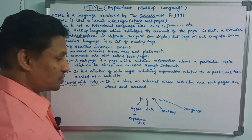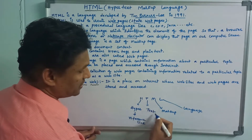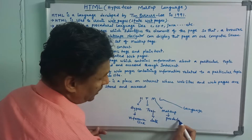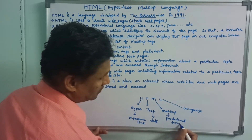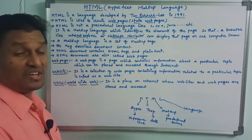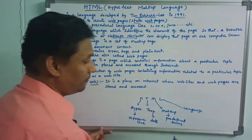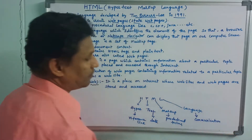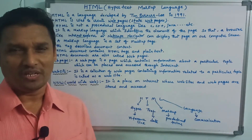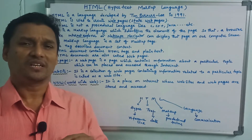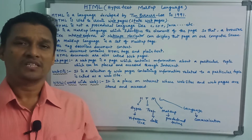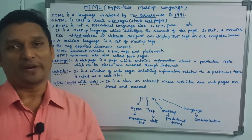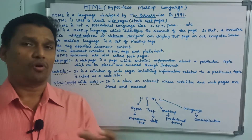So reference link means text is data. Markup means predefined terms — terms means keywords. So predefined keywords are called tags. Language means communication purpose. So HTML is a markup language; markup means a collection of tags, some set of predefined tags.